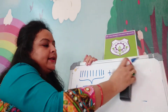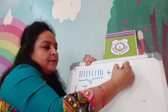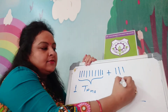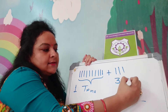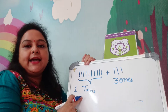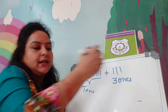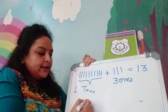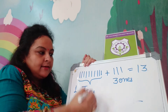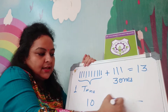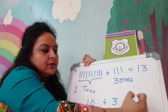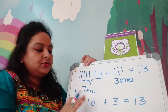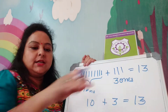1 ten plus — how many sticks are here? 3. Plus 3 ones. 1 ten plus 3 ones makes 13, because 1 ten is 10 and 3 ones is 3, is equal to 13. When you add 10 to 3, it will be 13.